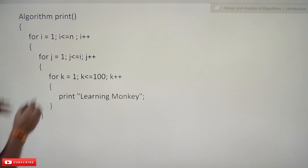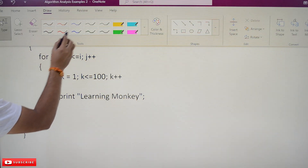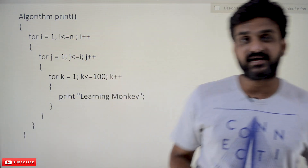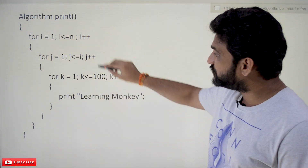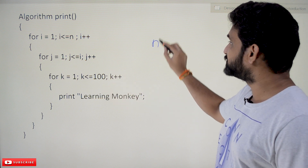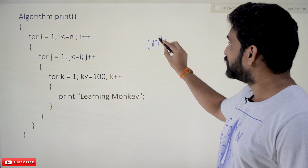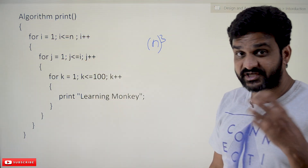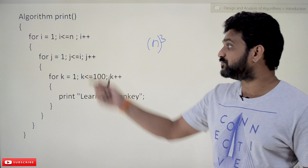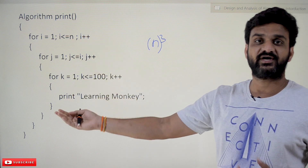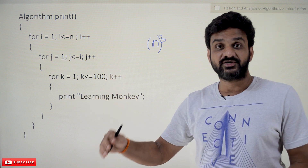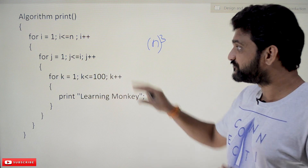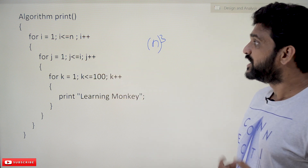Now the next algorithm — just by seeing it you may think this is also going to be n cubed since we have three loops. Don't think that way. The efficiency of an algorithm does not always depend on the number of loops — whether for loops or while loops — it varies. We have to analyze each algorithm carefully.